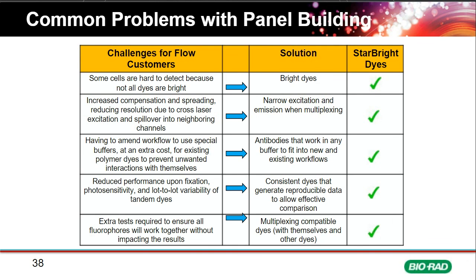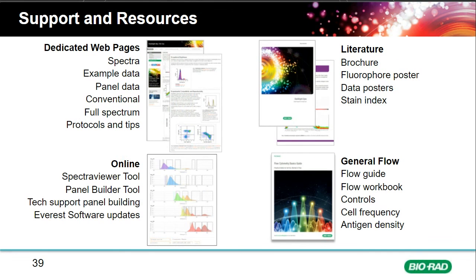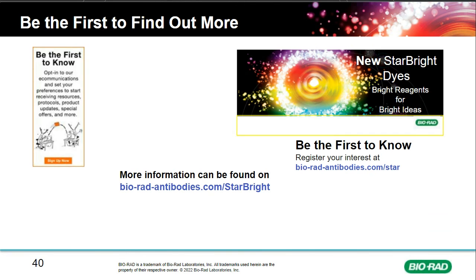Bio-Rad provides extensive support and resources for Star Bright dyes and flow cytometry in general. Dedicated web pages feature spectra, example data including conventional and full spectrum panels, and online tools such as a spectra viewer and panel builder containing Star Bright dyes. Tech support is available for panel building. Literature includes a brochure, a fluorophore poster, and stain index charts. General flow cytometry resources include a flow guide, workbook, and brochures on controls, cell frequency, and antigen density. For more information, visit bioradantibodies.com/starbright.